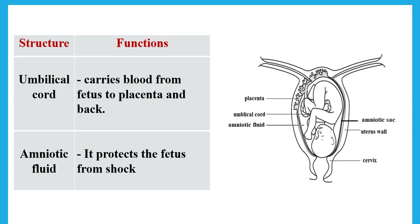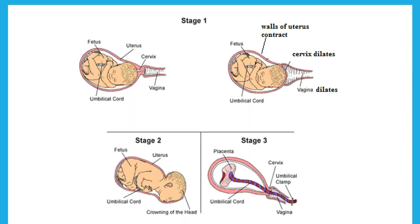The umbilical cord is the tube attaching the fetus to the placenta, and it contains blood vessels that carry blood to and from the fetus. The amniotic sac around the fetus secretes amniotic fluid, which protects the fetus from shock.